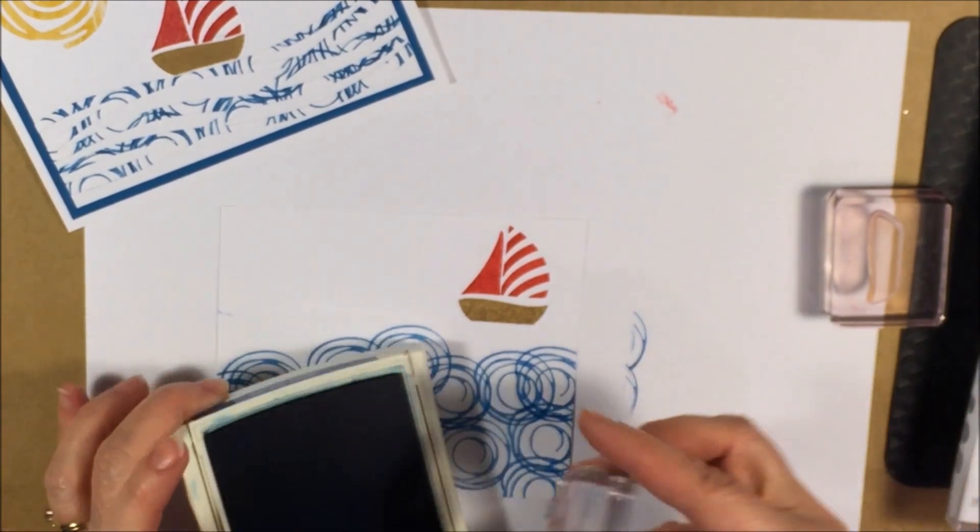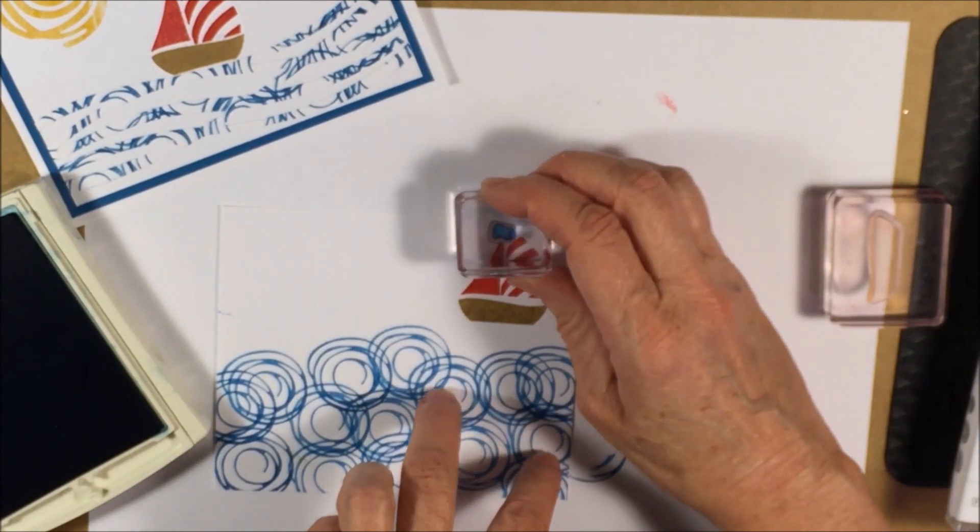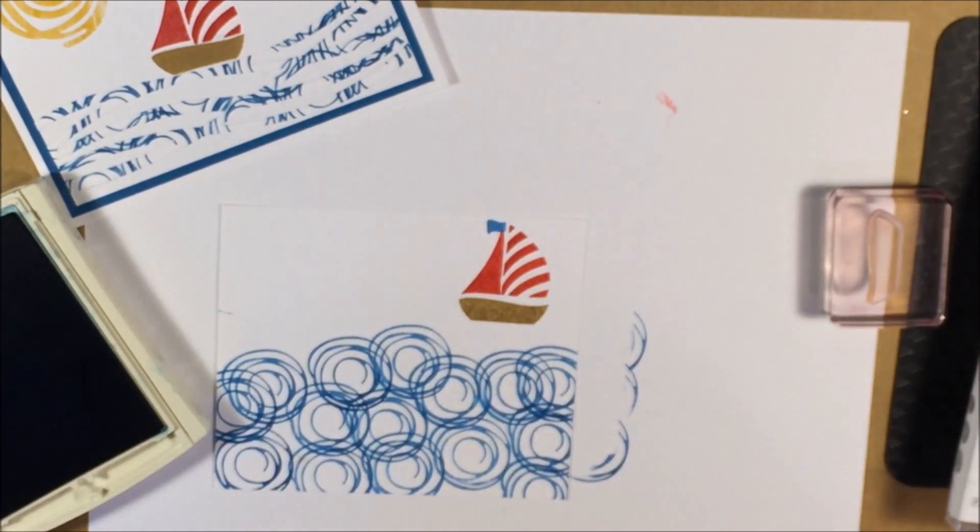And then there's a little teeny tiny flag and I used Pacific Point for that. I also made one in yellow. So there you go. You can see right through it. So the sailboat's done.